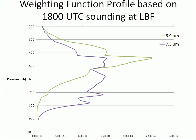The maximum values for the 6.9 micron channel are around 400 to 500 millibars — think of this as the net temperature of the layer of moisture peaking around 400 to 500 millibars, with decreasing values above and below. This data is available via the CURL button in the visit view controls to bring up weighting function profiles from any sounding site. Contrasting the green curve from water vapor with the purple 7.3 micron sounder curve, we see the sounder covers a broader layer and extends down into lower levels.